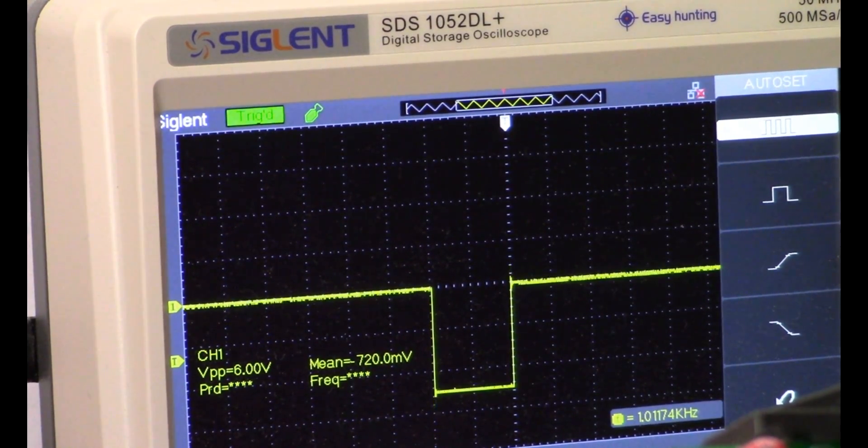And just for the sake of clarity, that is R46 on the board that is varying that pulse width. All right, so we're going to get on to the transmit circuitry next. Thanks.